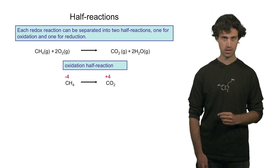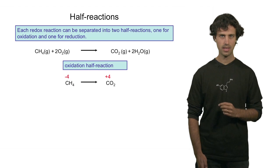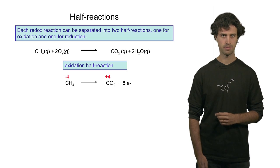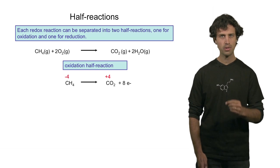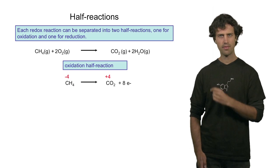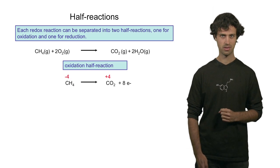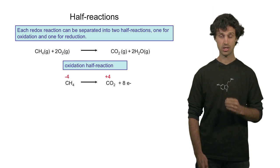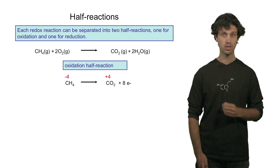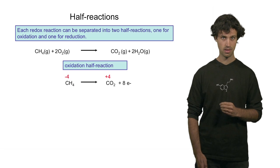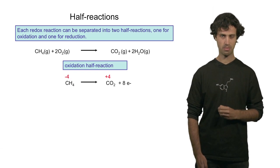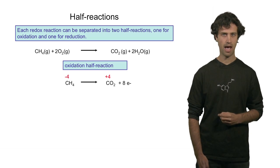In the oxidation half reaction, we can explicitly write those 8 electrons as a product on the product side of the equation. Note that at this particular stage, this half reaction is not yet balanced. For instance, the number of hydrogen atoms and oxygen atoms is not balanced, and the charges are not balanced. This half reaction just shows that 8 electrons are being generated.